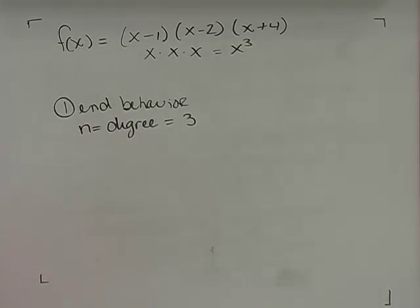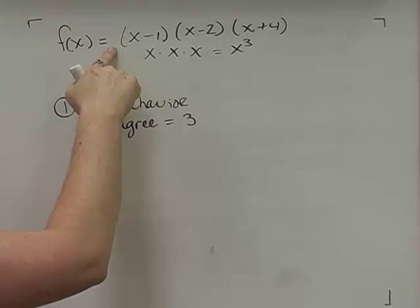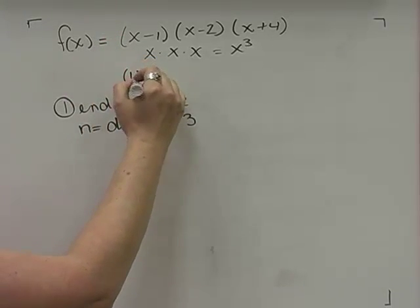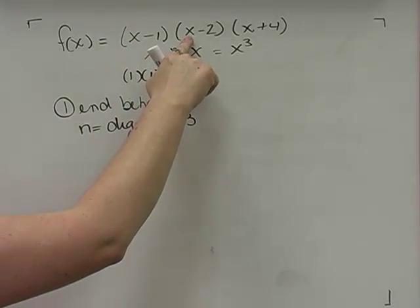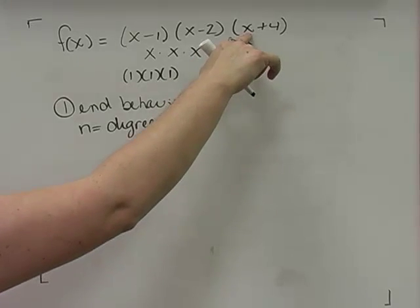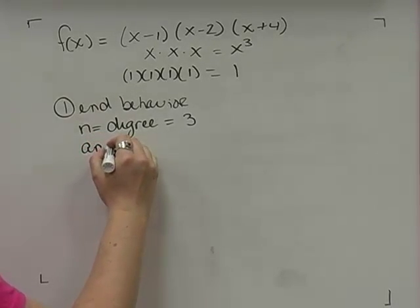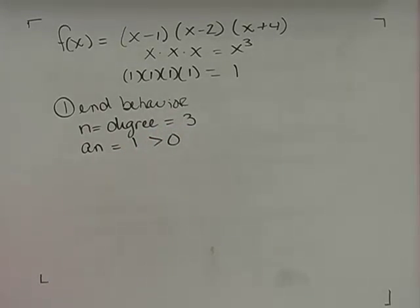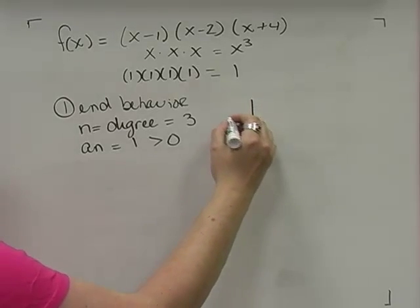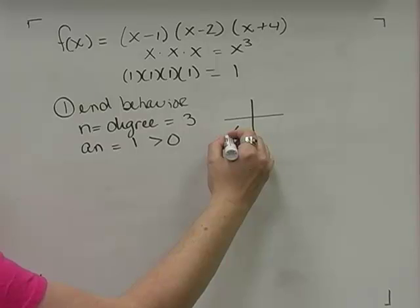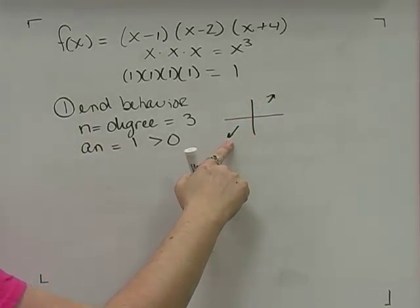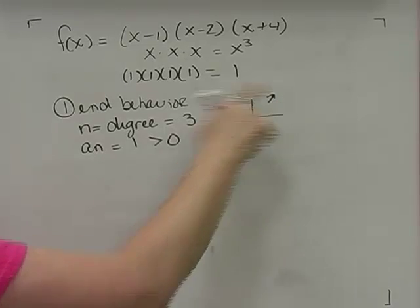We call the degree n, so n = 3. Next, I need to find the leading coefficient. Pulling the coefficients off each x term: each factor has an implied coefficient of 1, so the leading coefficient aₙ = 1, which is greater than 0. Based on odd degree and positive leading coefficient, as x approaches negative infinity f(x) → −∞, and as x approaches positive infinity f(x) → +∞.